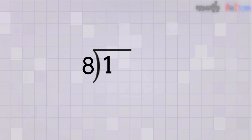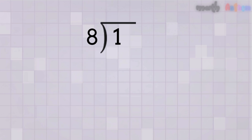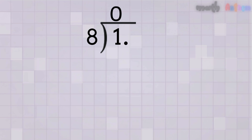Now imagine we want to convert 1-eighth into a decimal. We start with our traditional division symbol — put the 8 outside and the 1 inside. How many times does 8 go into 1? Well, 8 doesn't go into 1 because 8 is bigger than 1. We write our first zero since the number doesn't fit yet. We bring in our secret weapon — the decimal point. We place a decimal point right after the 1, then add a zero right after it, making it 1.0.